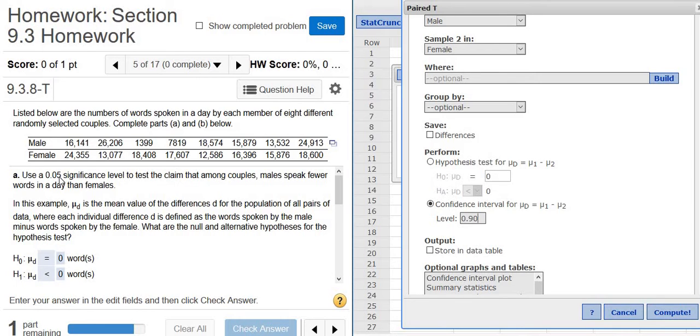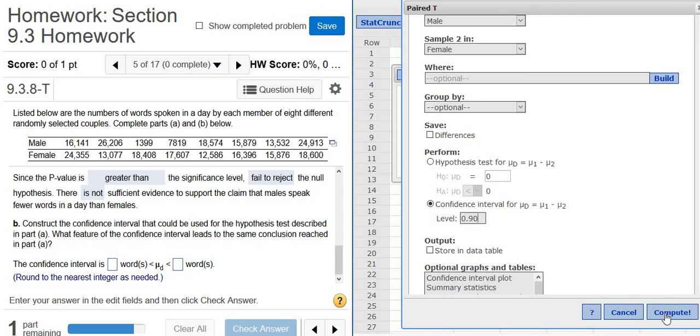If it was not equal to, like say this was not equal to here, it would be .95. So whenever it's not equal to, you just do 1 minus alpha. When it's less than or greater than, you do 1 minus 2 alpha. So just kind of a random thing to keep in mind. So let's try it.